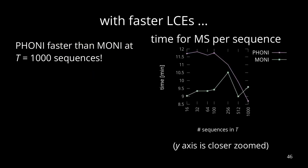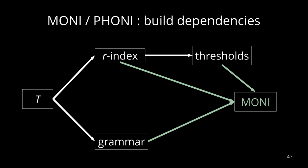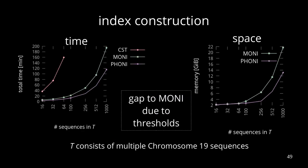Interestingly, this works better — it's even faster than MONI for 1000 sequences. You can see a little more jittering, but that's because we zoomed in on the y-axis. For querying, we get better performance when T is large. For the construction, we're always better than MONI. That's because MONI needs auxiliary data structures called thresholds for the thresholds algorithm — it needs the r-index, the thresholds, and the grammar. We can just cope with the r-index and the grammar. These thresholds take significantly more time and space during construction, in particular if T gets large, as you can see in the left-hand and right-hand side plots. You can also see in the left-hand side plot that the compressed suffix tree also needs a lot of time for construction.